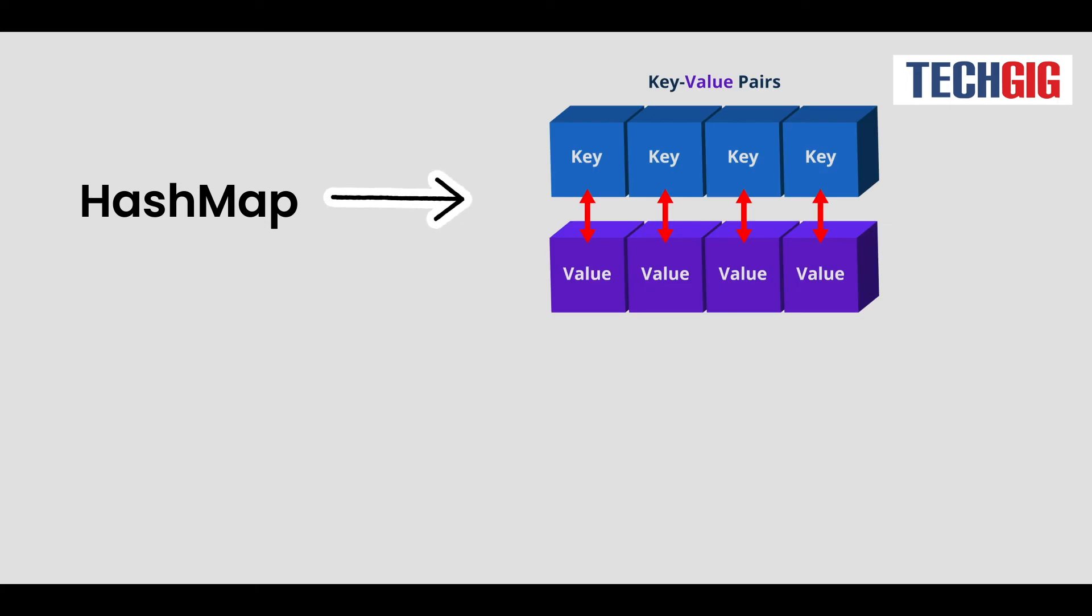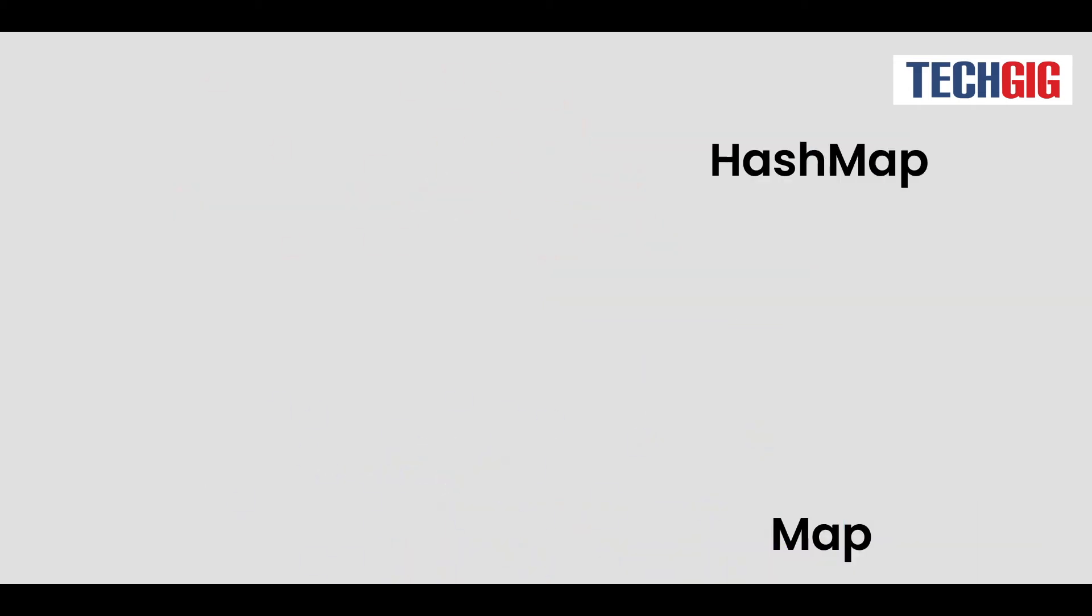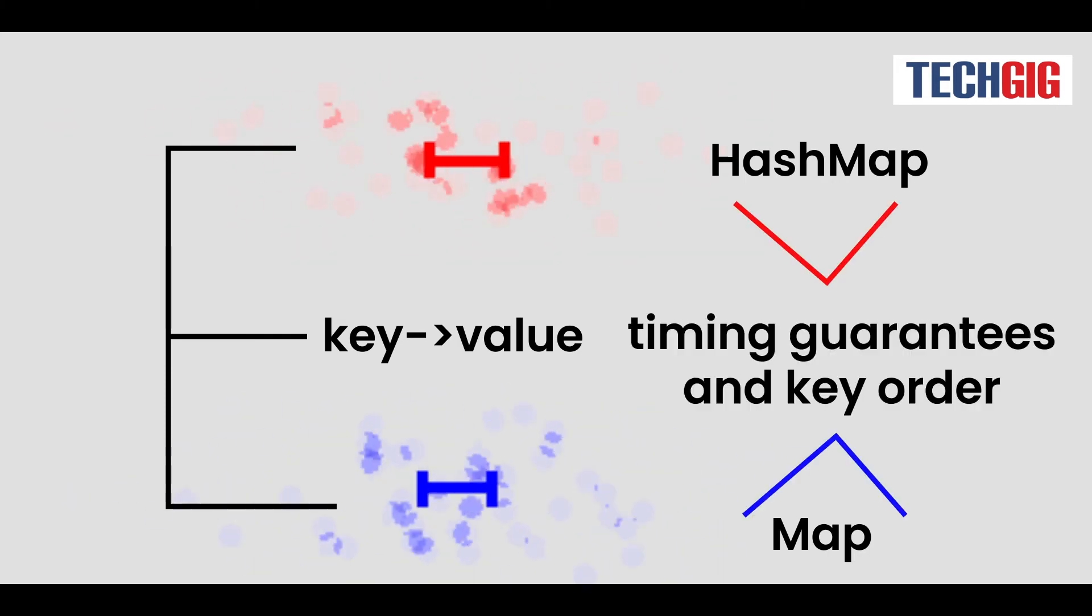HashMap is a Java collection framework non-synchronized class that holds null values and keys, whereas Map is a Java interface for mapping key pair values. Although both feature a key value map and a method to iterate over the keys, the most significant distinctions between these two classes are timing guarantees in key order.